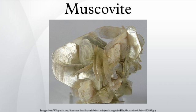It can be colorless or tinted through grays, browns, greens, yellows, or violet or red, and can be transparent or translucent. It is anisotropic and has high birefringence. Its crystal system is monoclinic. The green, chromium-rich variety is called fuchsite. Mariposite is also a chromium-rich type of muscovite.